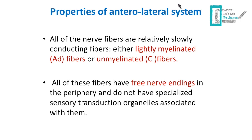The properties of the anterolateral system or the spinothalamic tract are as follows. All the nerve fibers are relatively slow conducting fibers because they're either lightly myelinated A-delta fibers or unmyelinated C fibers. All of these fibers have free nerve endings in the periphery and do not have specialized sensory transduction organelles associated with them. Compare that to the dorsal column, which was fast — myelinated, large diameter neurons — and also had specialized sensory transduction organelles.